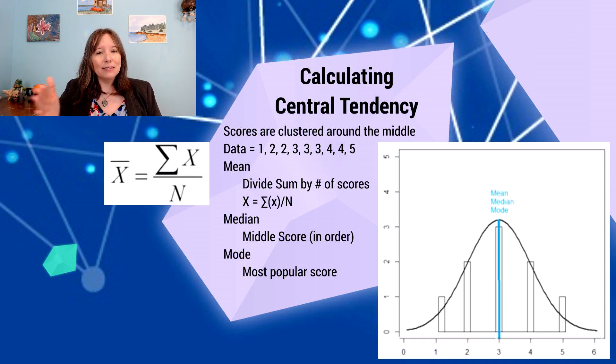Now, I've already listed the scores in order. Sometimes you'll have scores that are out of order. You have to rearrange them, putting the lowest scores first and the highest scores last. But they're already arranged. And out of our nine scores, we can see the middle score with four scores above it and four scores below it. The median or the middle score is three. And just by virtue of looking at that, looking at the mode, the most popular score out of those nine scores, there's only one one and one five. There's two twos and two fours, but there's three threes. So three is our most popular score.